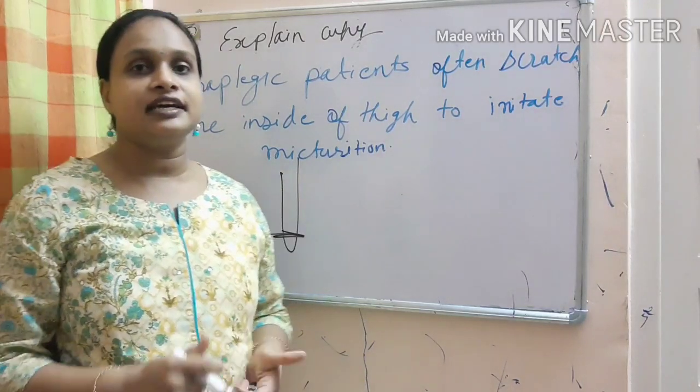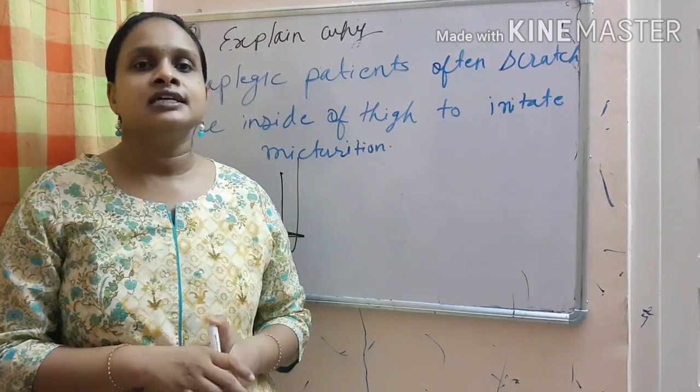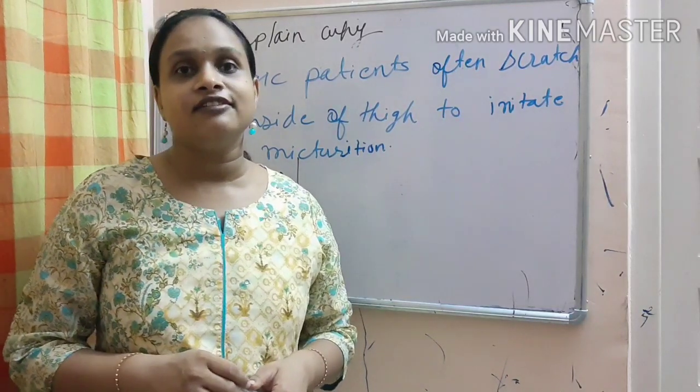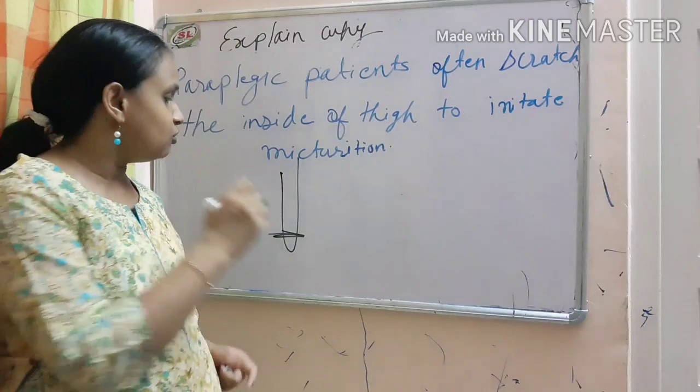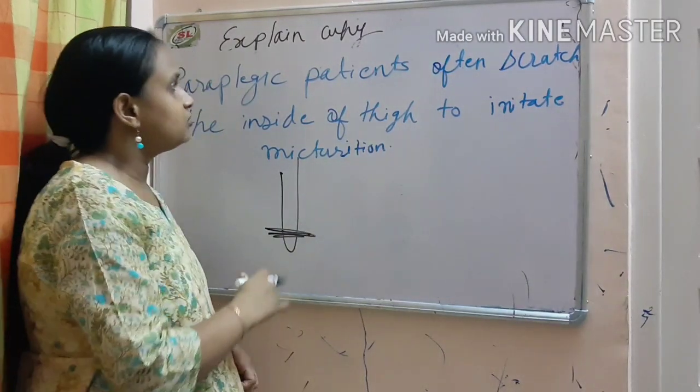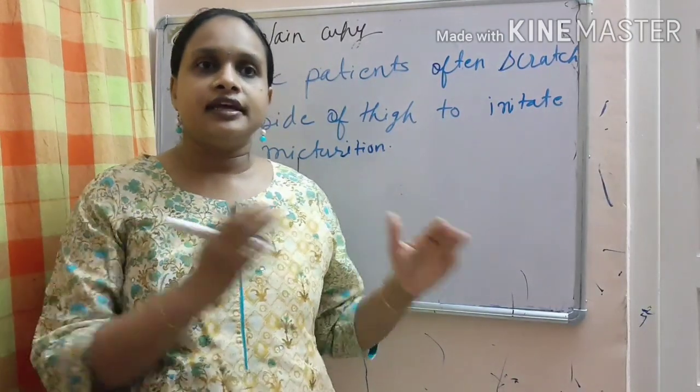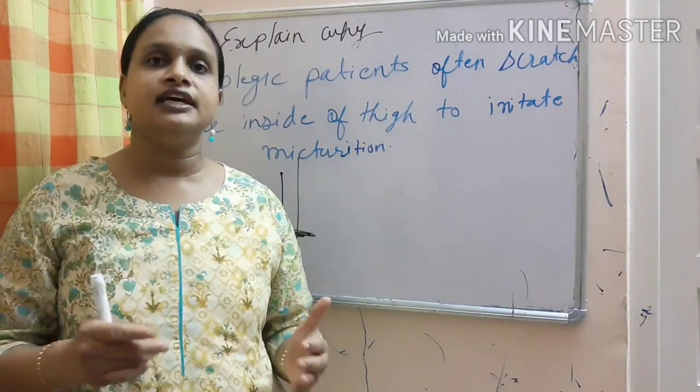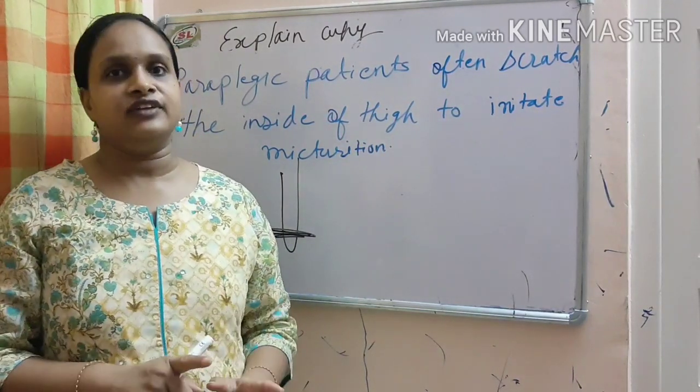One question was there, what will happen if there is spinal cord injury at the level of cervical spine. In that, the patient will die. But at the lower level, it will lead to the paraplegia. So, in paraplegia, there are various phases and when the reflex activity comes back, there is one reflex known as mass reflex.